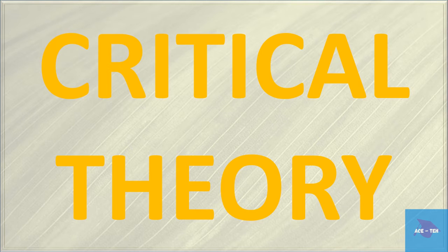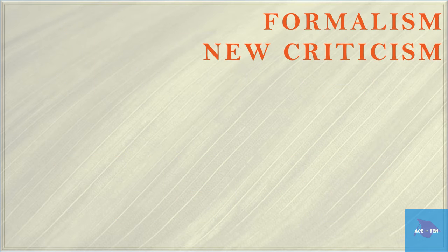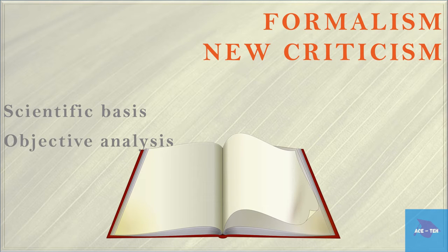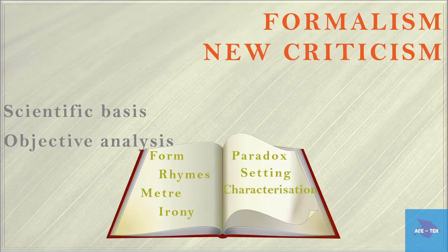Now let us look at the major critical theories and how we apply each theory to literature. Let's understand them in the simplest language. Formalism and new criticism focused on the study of literature on a scientific basis through objective analysis. You look at the form of a work, rhymes used, meter, irony, paradox, setting, characterization, plot, everything you see inside the text.